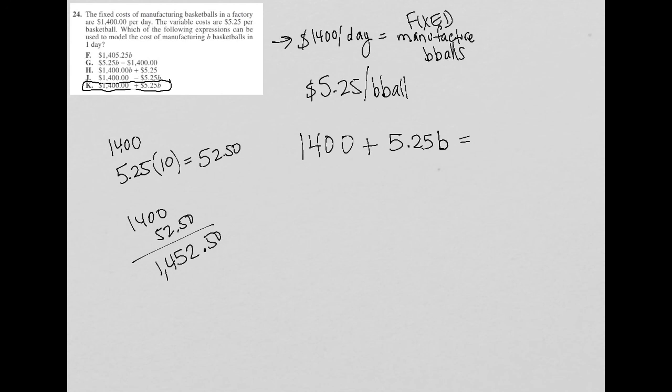And in essence, what you've done is you've plugged in your own number for b. So then what you do is you go back up to the answer choices, you plug in b equals 10, and you find which one of those answers gives you the expected value that you got.